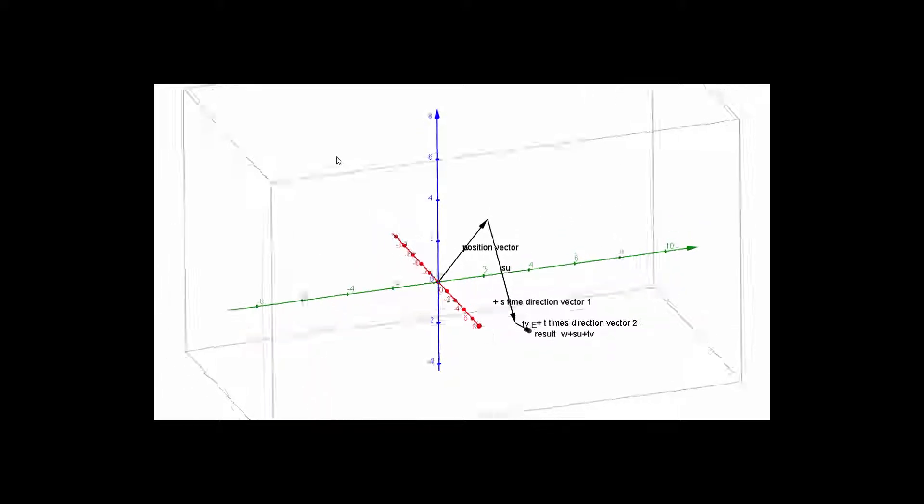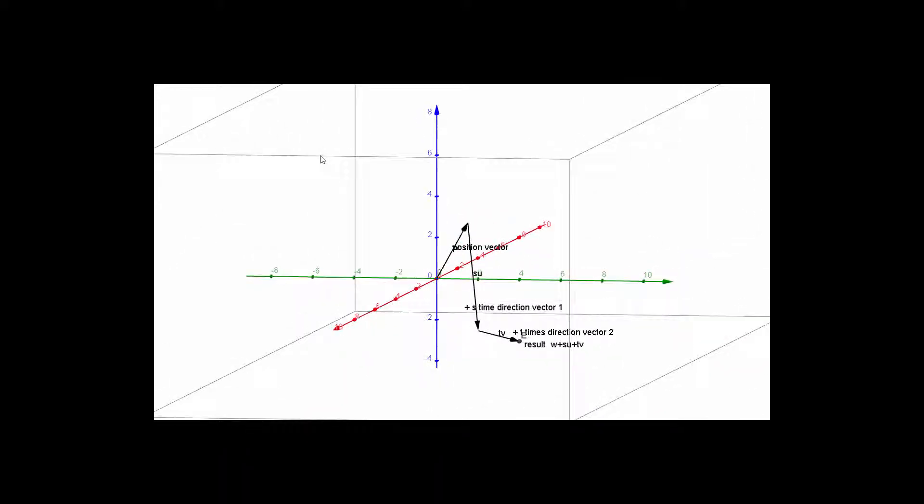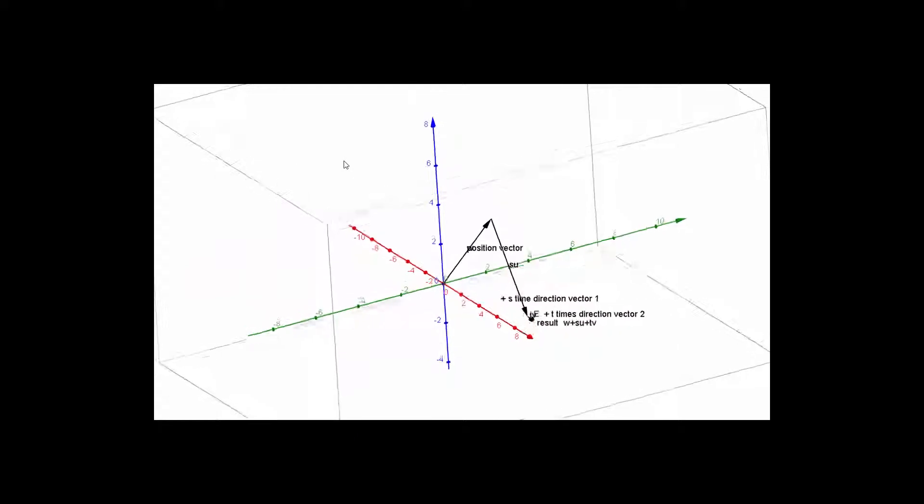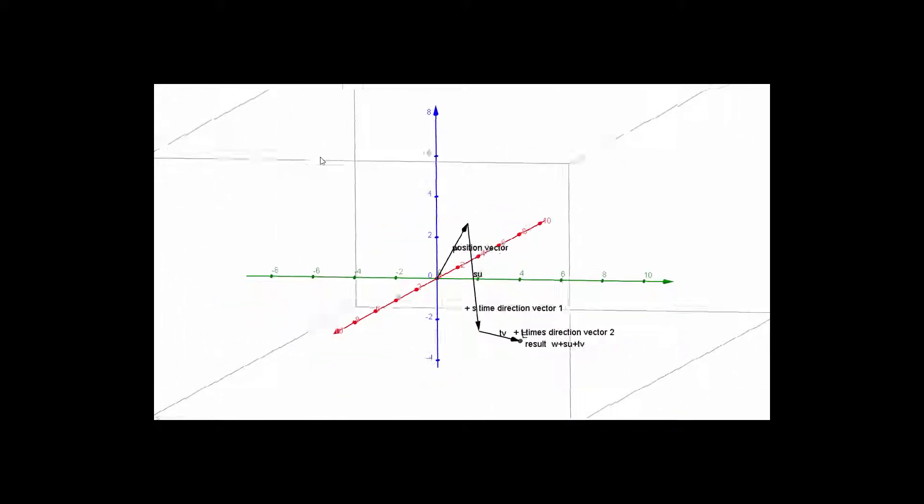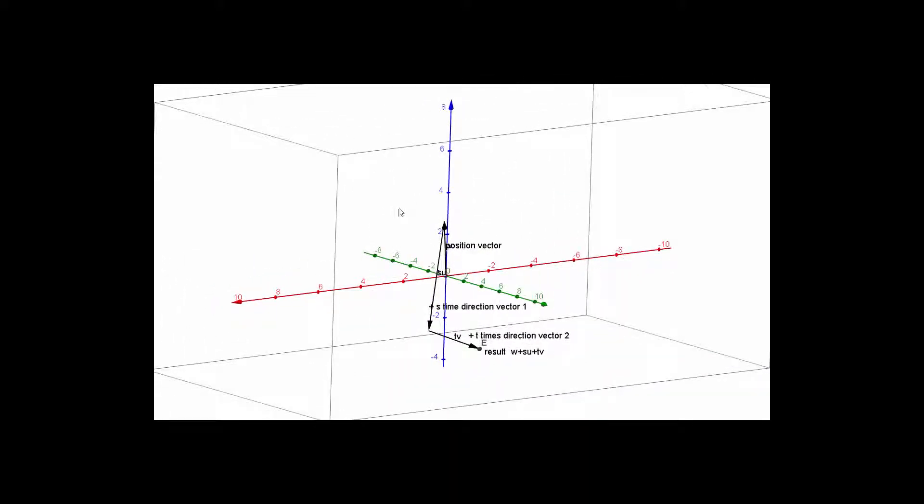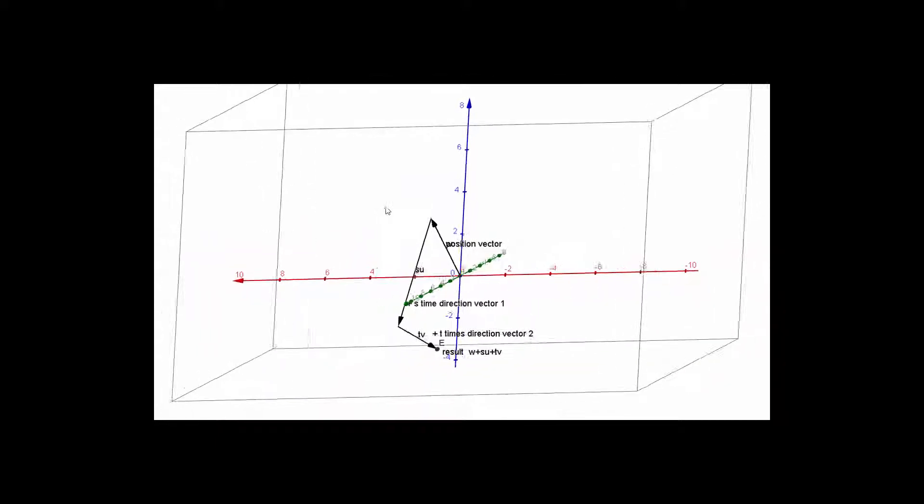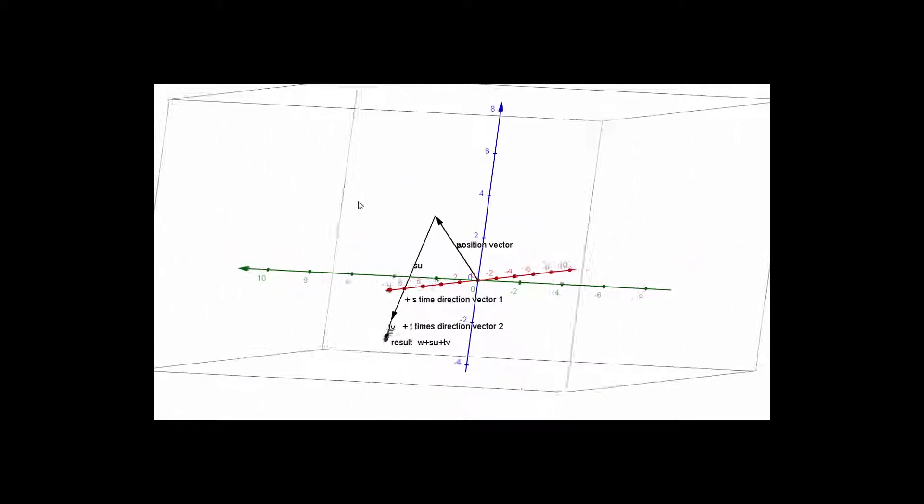And so really, if you think about it, it makes sense. That plane contains both of those direction vectors, and of course, two lines or two vectors essentially define a plane. So there we are.